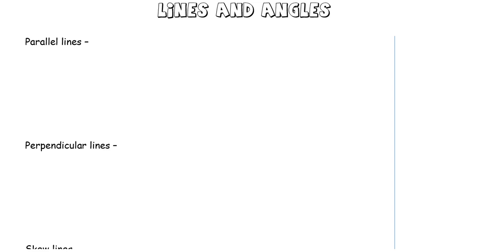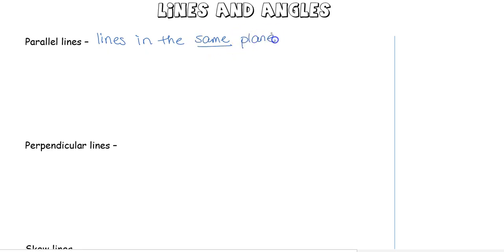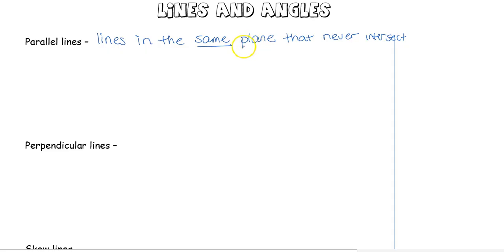This is your first video for our new unit. We are going to look at some lines and angles. The first set of lines we're going to look at are parallel lines. Parallel lines are lines in the same plane that never intersect. You've probably heard of parallel lines before, but we have some additional information now that we know what a plane is. Parallel lines have to be in the same plane and are never going to touch because they go the same direction.